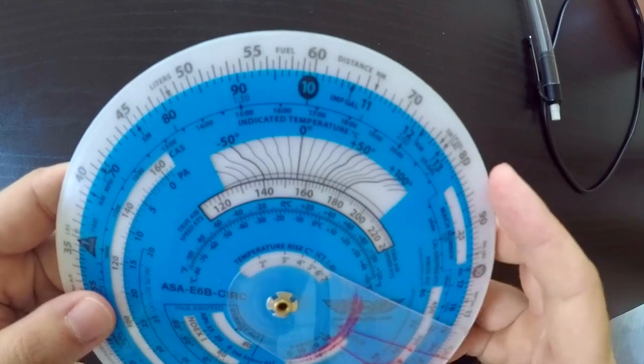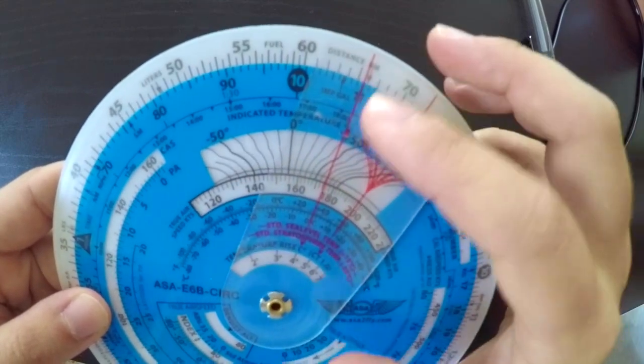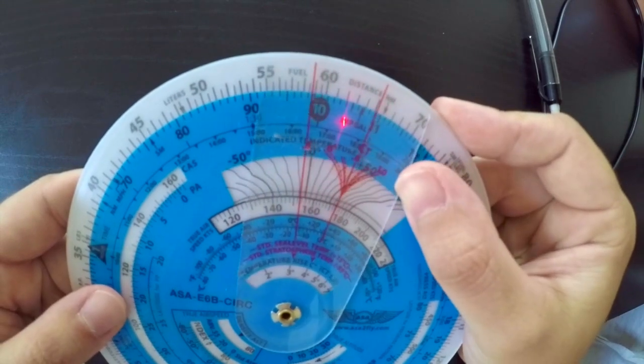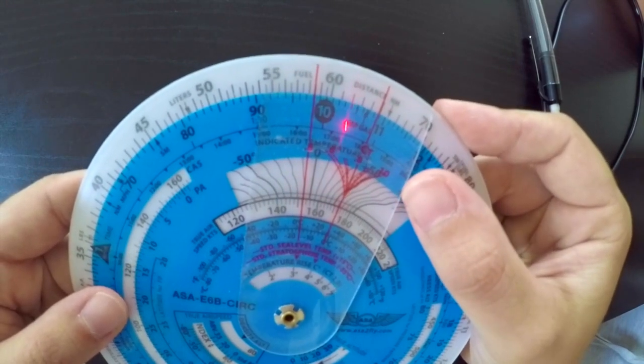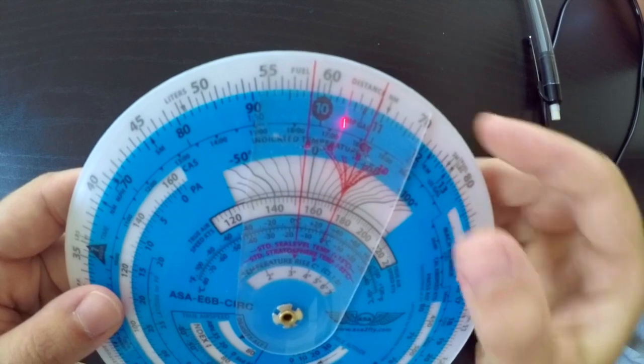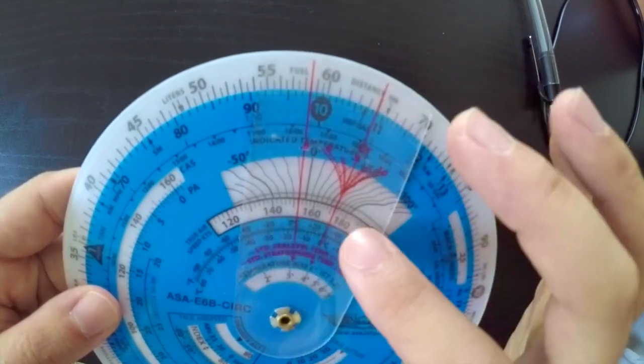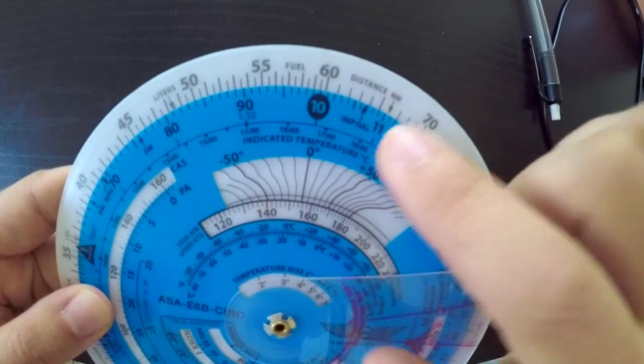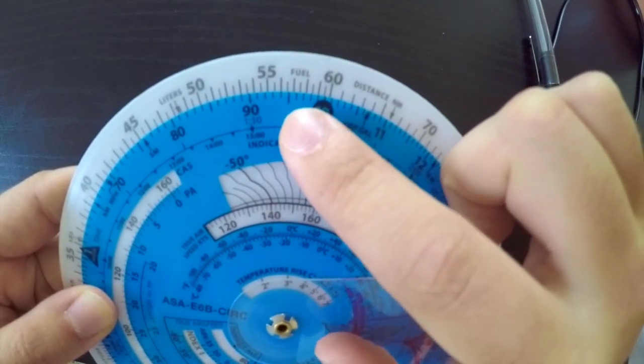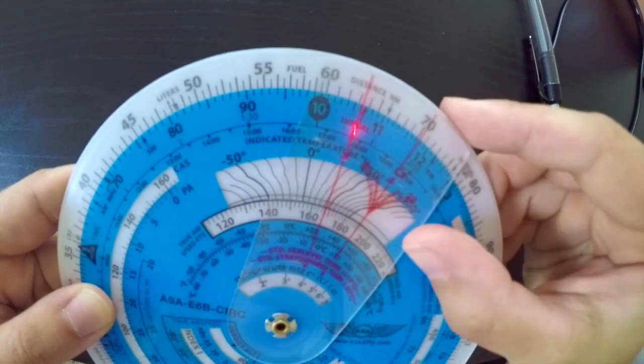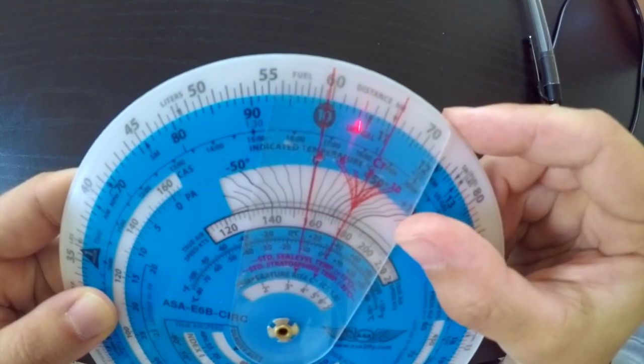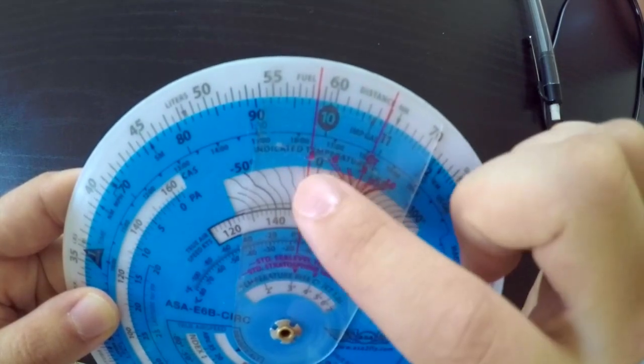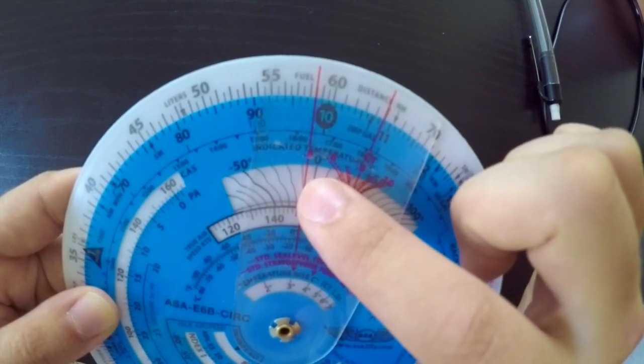So to do this, you're going to use one of these red guiding lines right here, and you're going to match up the temperature that it currently is outside, so we said it was negative 10 degrees, with the true airspeed on this scale right here. So if you look on this blue inner ring, each of these little tick marks represents 5 degrees in either direction. So we said the temperature was negative 10, so we'll move it over 2 marks.